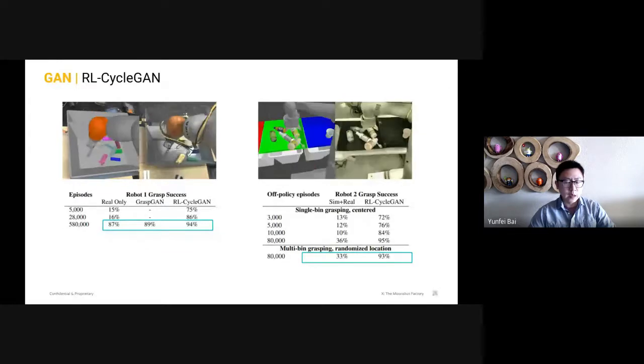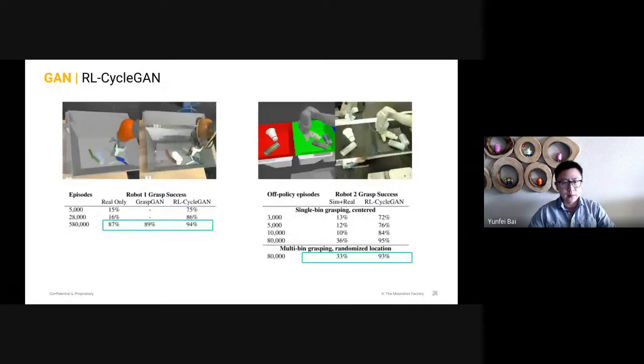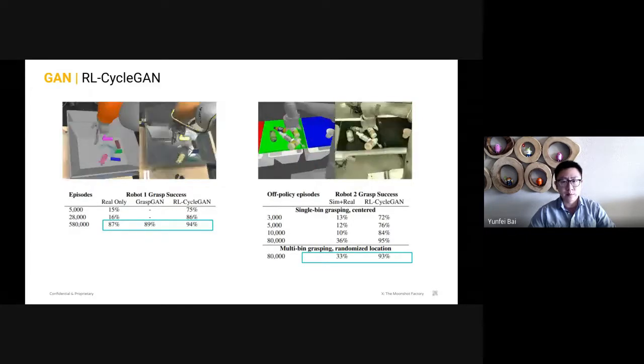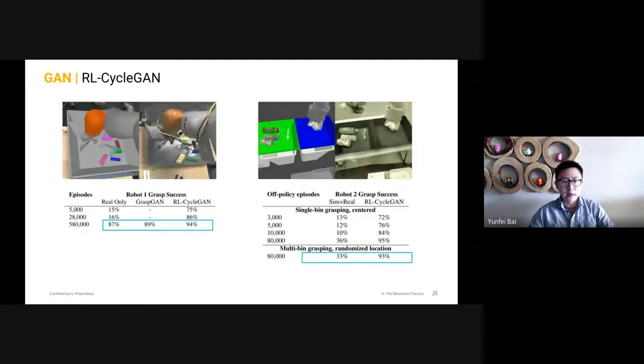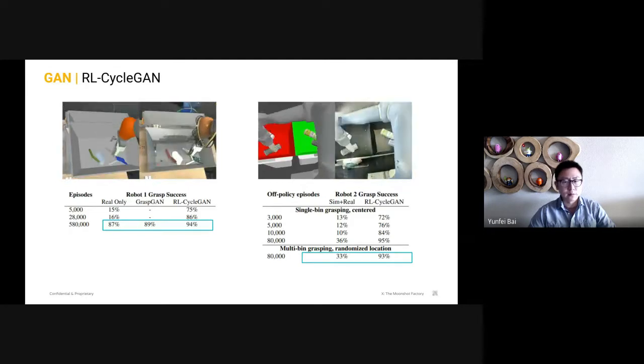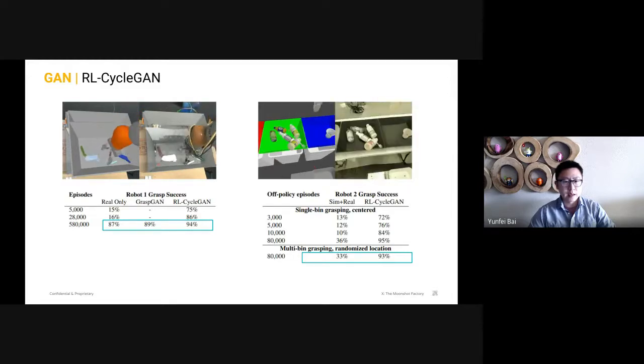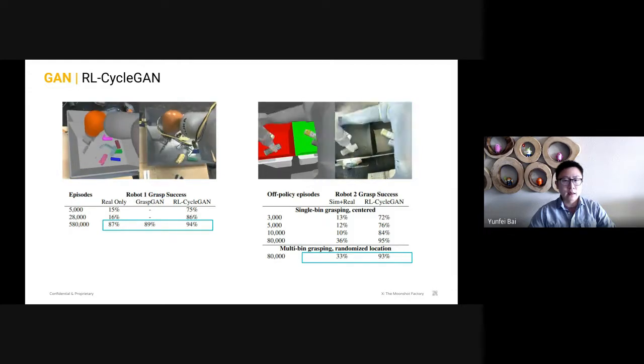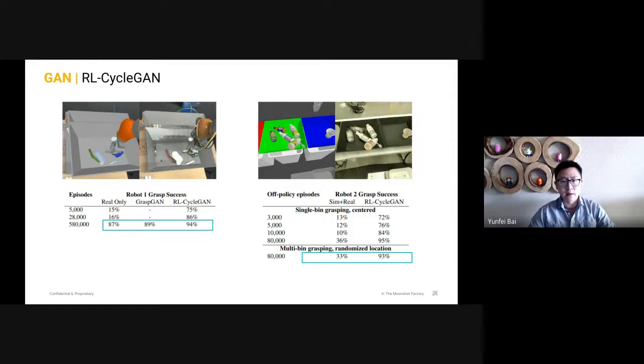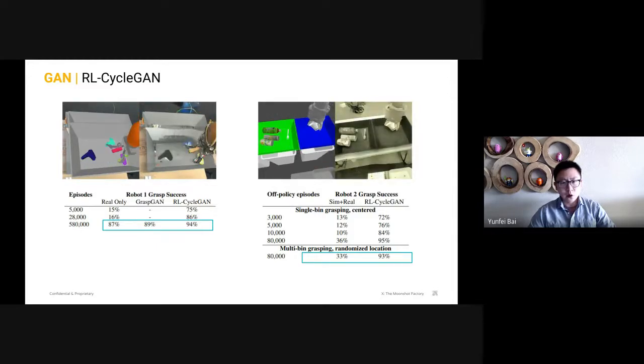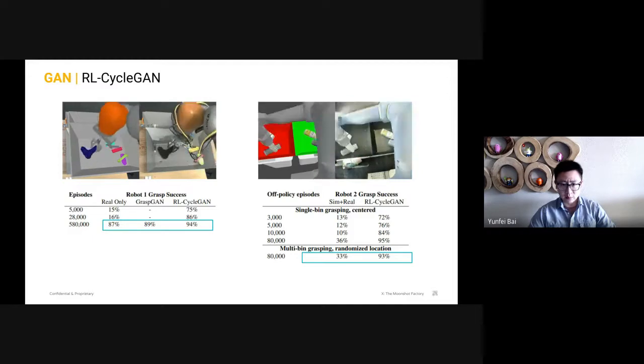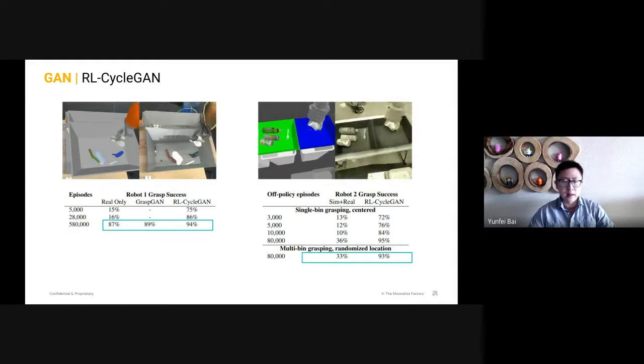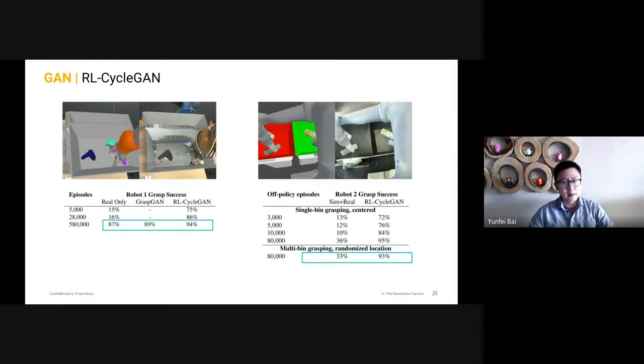Here we have two robot setups. For the first robot setup on the left, RL-CycleGAN is able to achieve 94% grasp success rate with only previously collected off-policy trials. This is higher than the previous GraspGAN method. For the second setup on the right, with only 80,000 real episodes, which is much less than all the off-policy data we have, the model trained with RL-CycleGAN reaches state-of-the-art performance at 95% grasp success rate, which is much higher than the 33% from simply mixing similar real data.